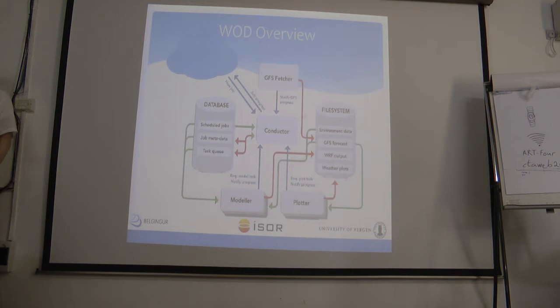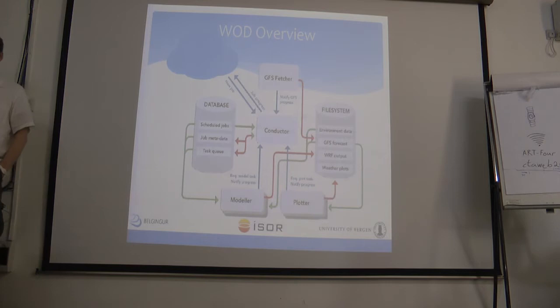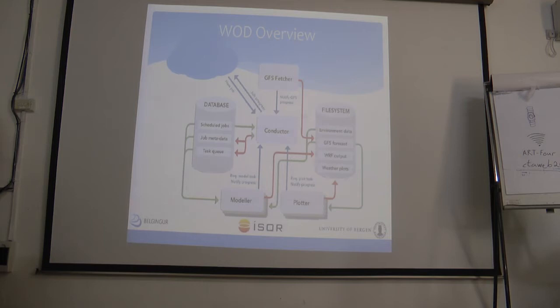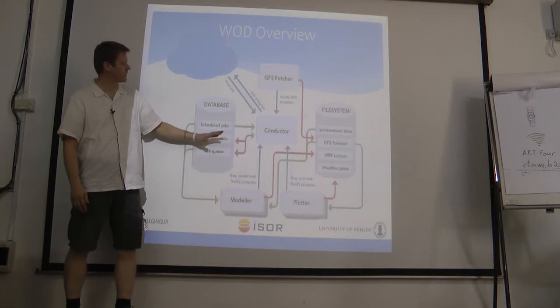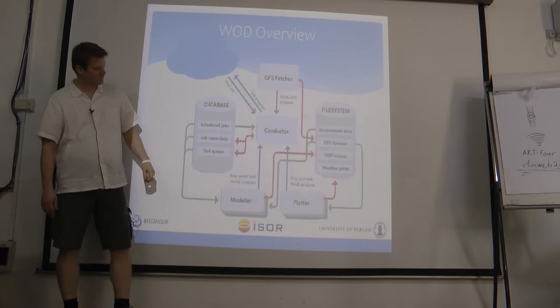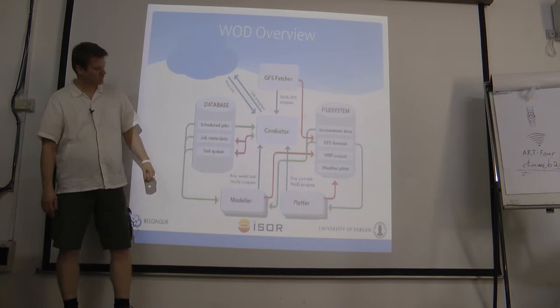Here is a schematic of the main components of the WAT system. There are many lines going back and forth with different colors. In the middle is what we call the conductor - the spider at the center of its web. The color coding is: red arrows indicate data is being written, so for example the conductor has a red line to the job metadata and task queue, meaning the conductor is writing to those parts of the database. Green lines mean data is being read.